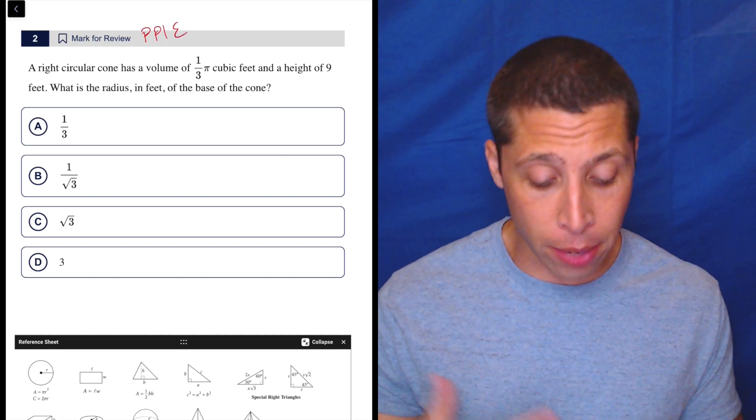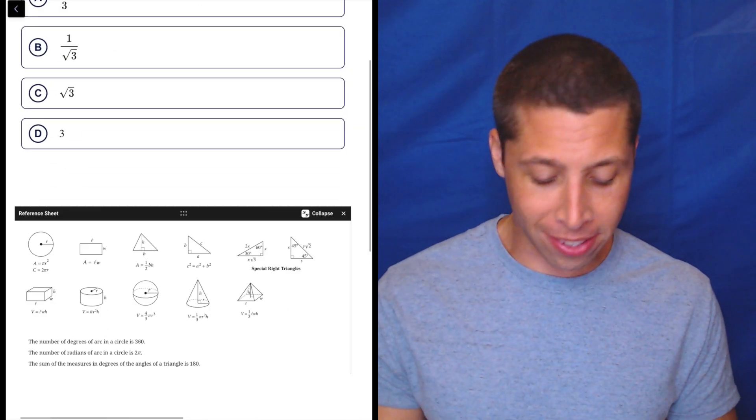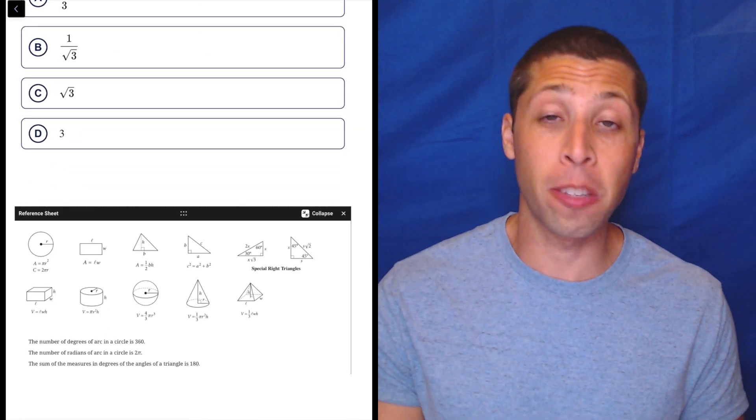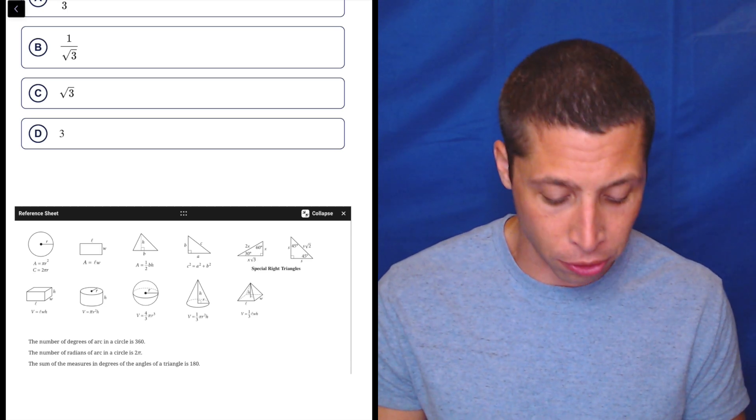We have some values. We have a height. We have a volume of this cone. And then, of course, where's the equation? Well, it's in the reference chart. So many of the geometry questions, especially the equations for volume, are going to be just given to us in the reference chart. So just go and steal them.